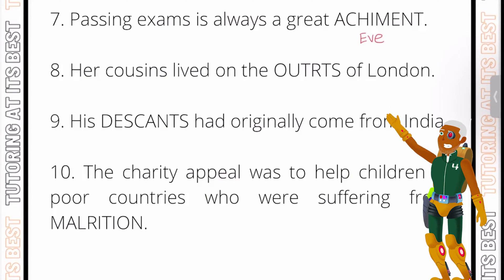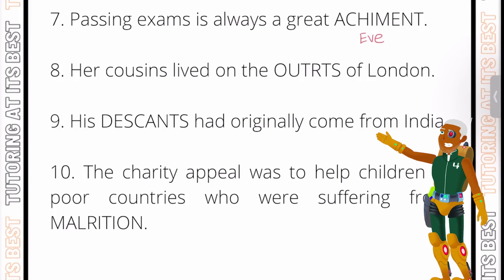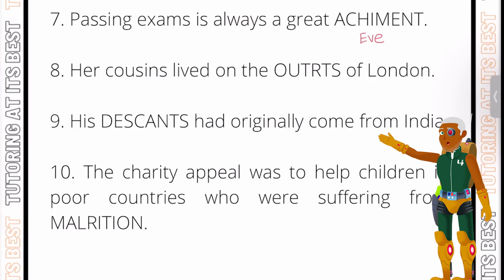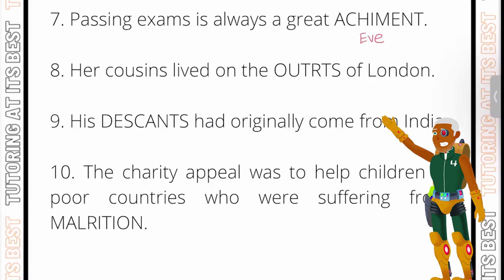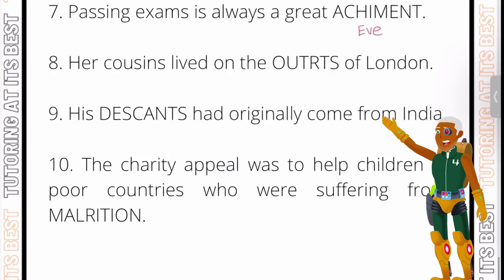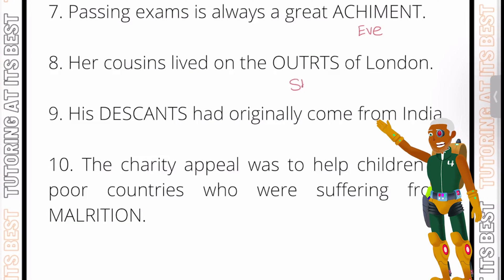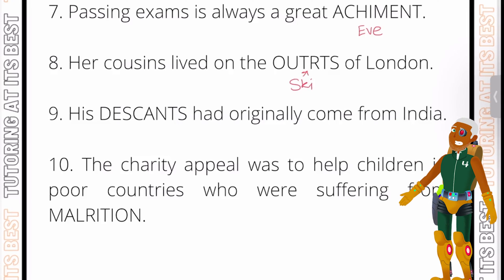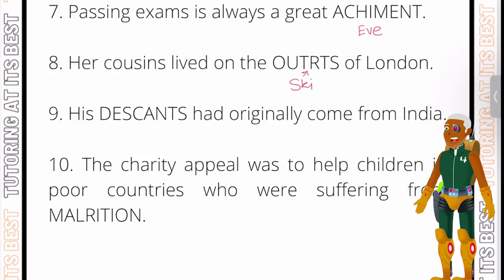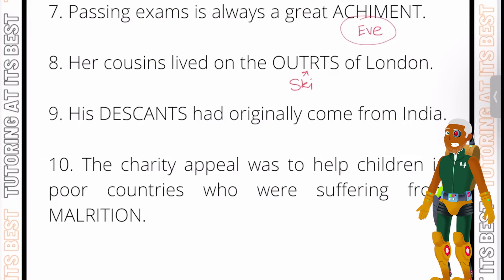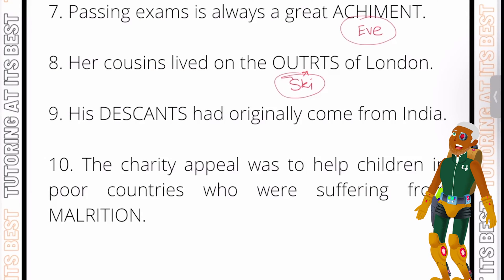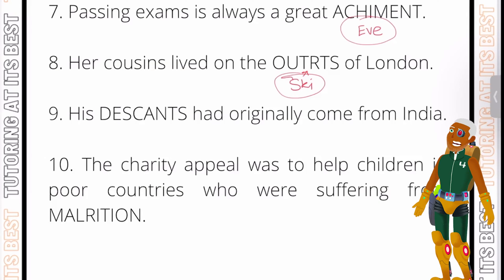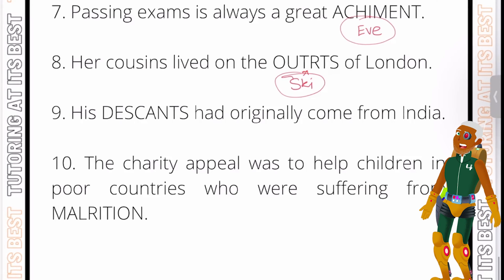Question eight: 'Her cousins lived on the OUTTS of London.' The three-letter word is S-K-I, inserted just after the first T, giving us 'outskirts of London'.